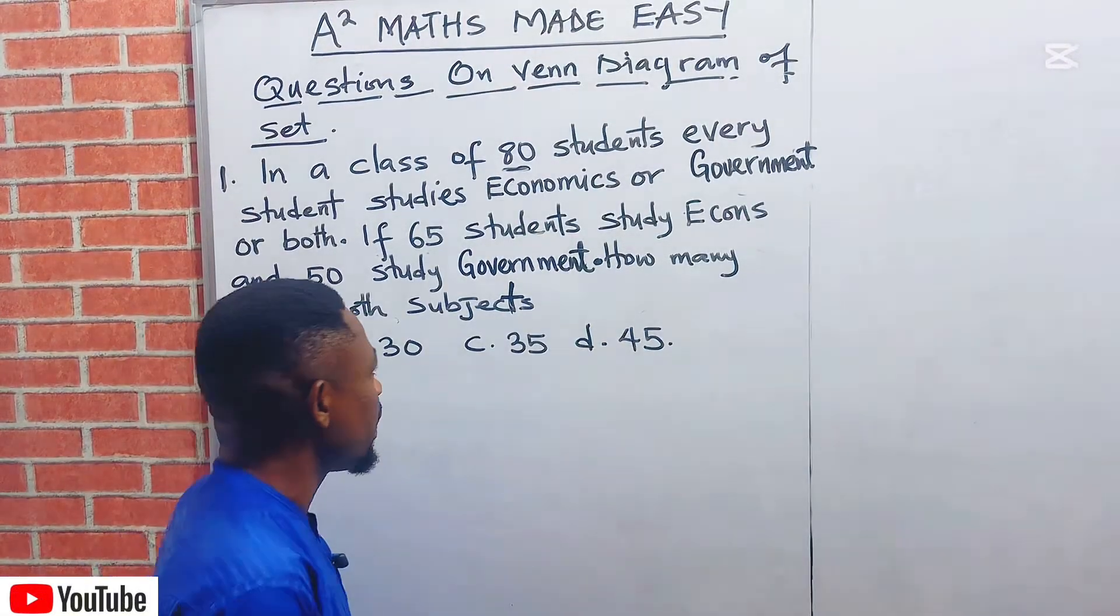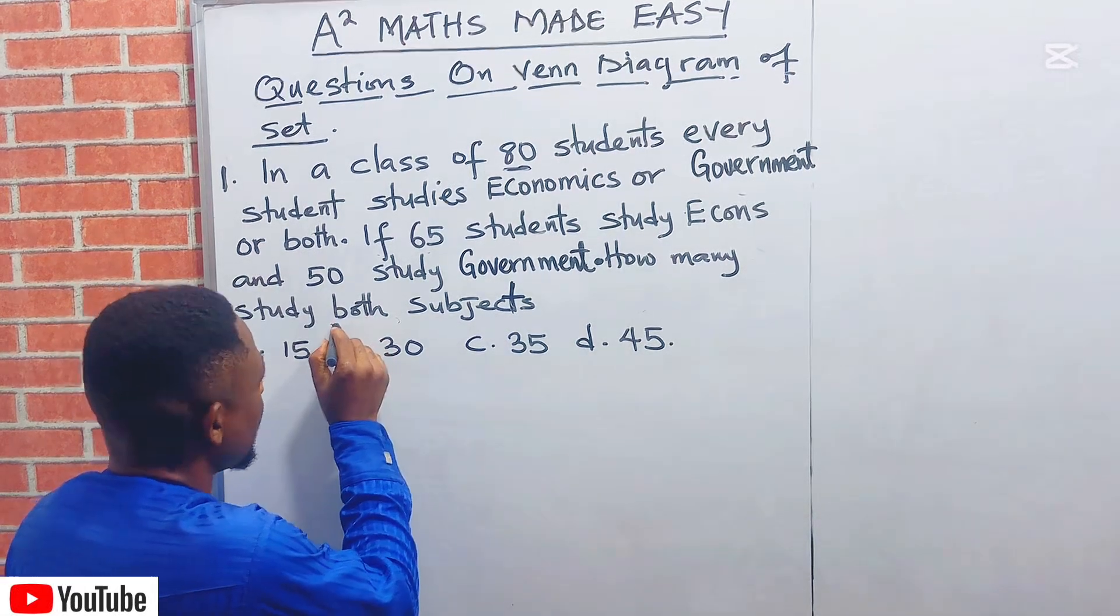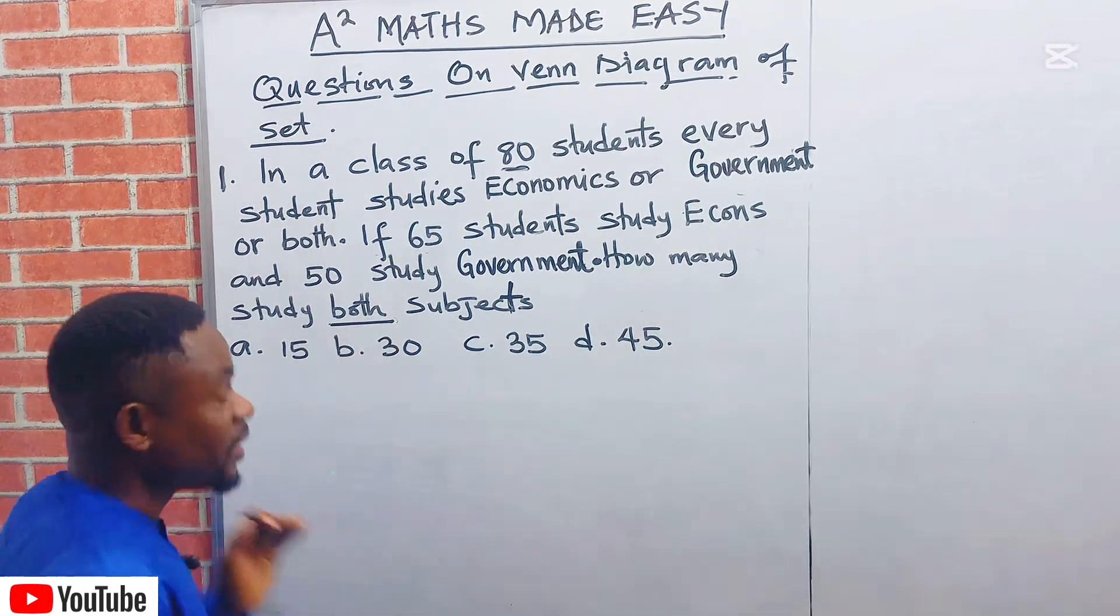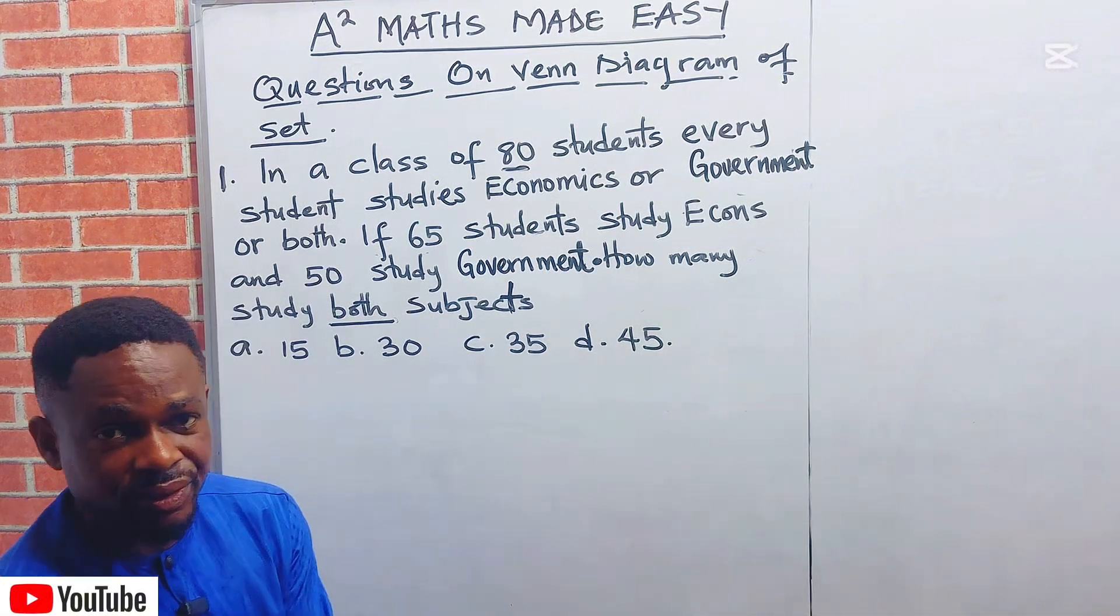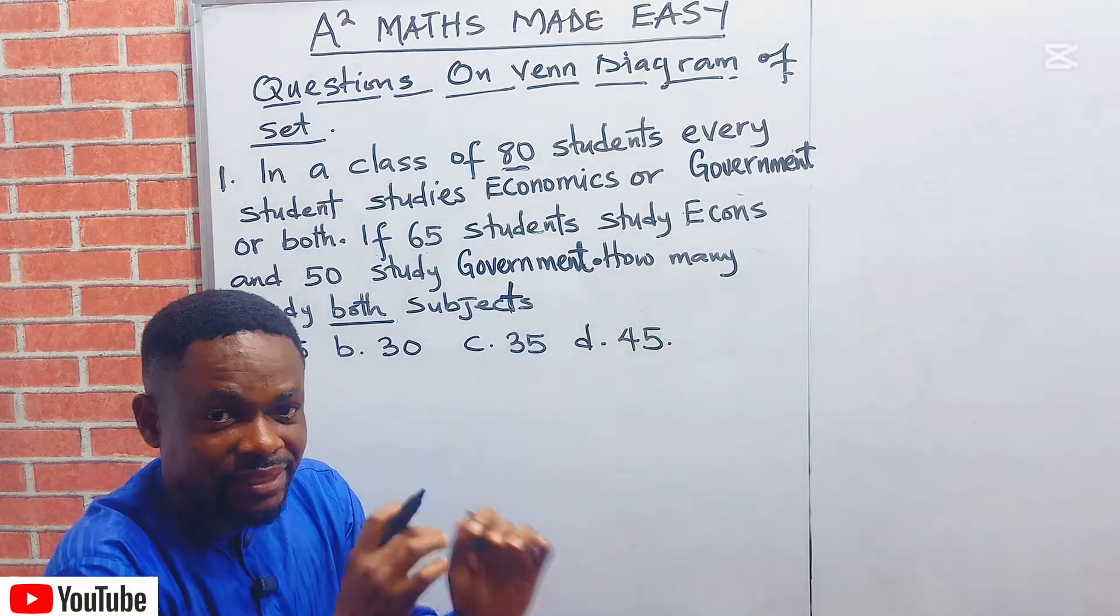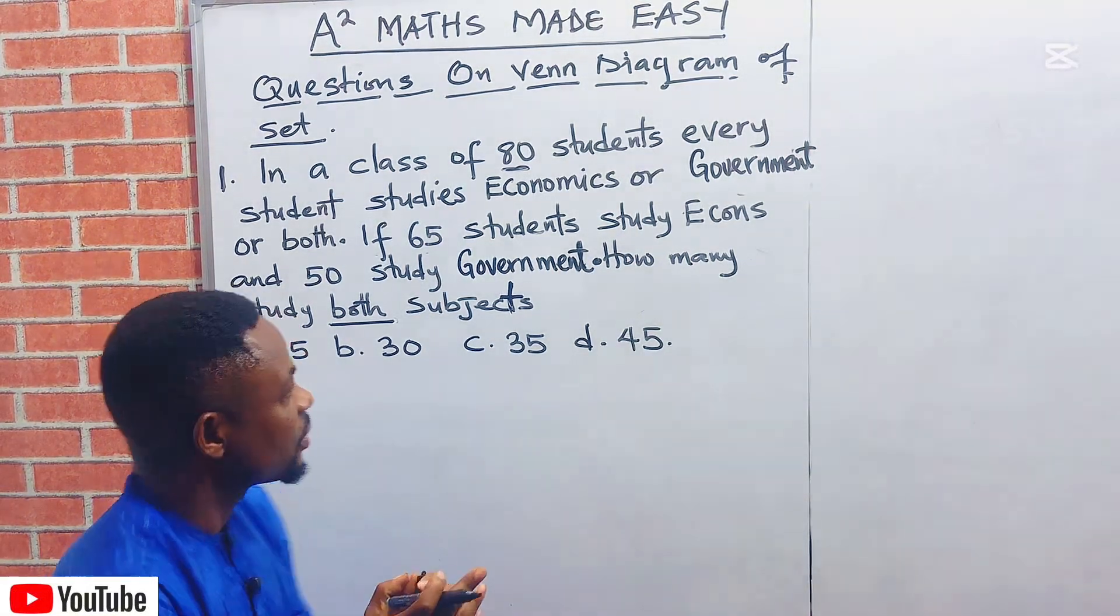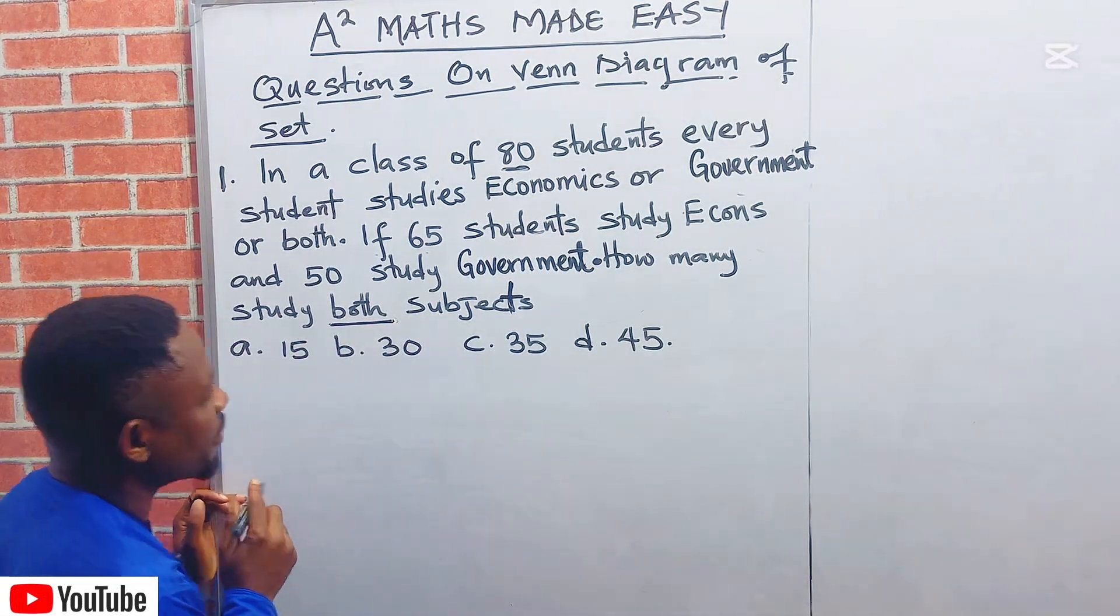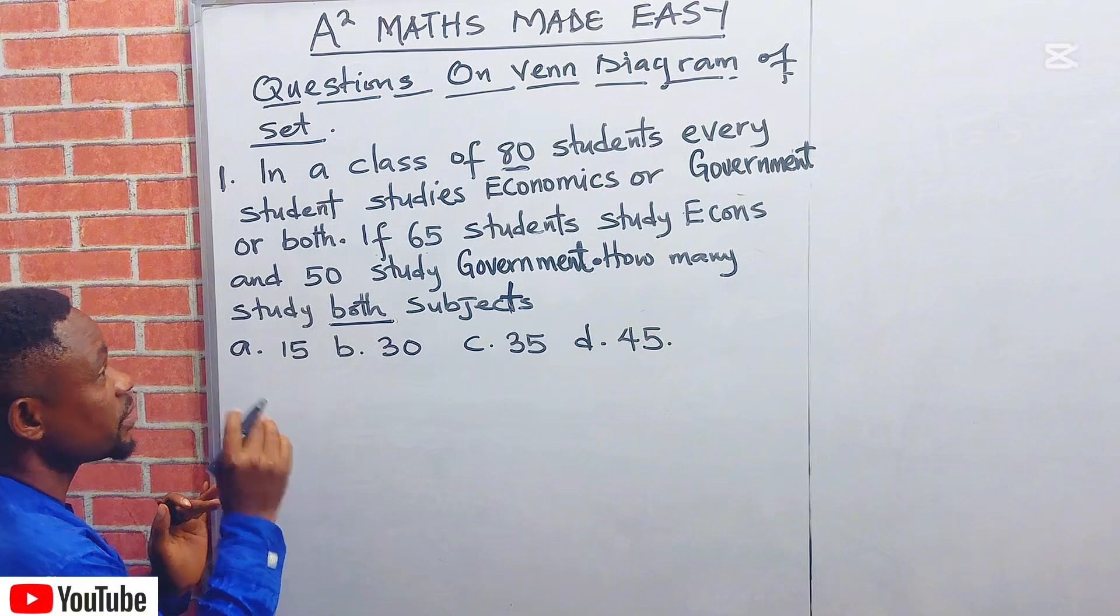If 65 students study Economics and 50 study Government, how many study both subjects? The keyword there is both. Just underline the word both. The question is, what is exactly the meaning of both? It is intersection. That is the common element that exists between the two sets. Anytime you are looking for both in a Venn diagram, this is the formula.